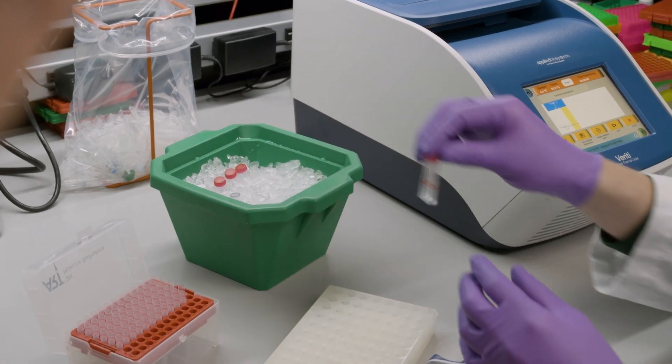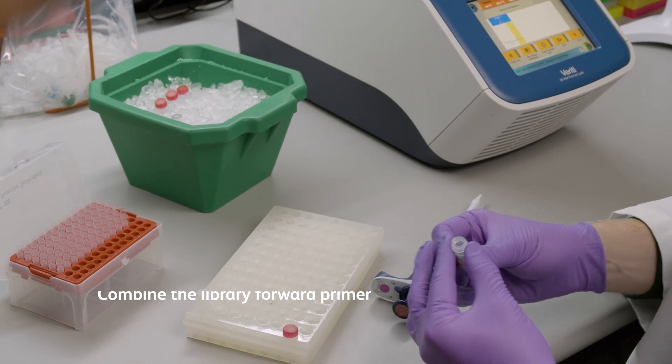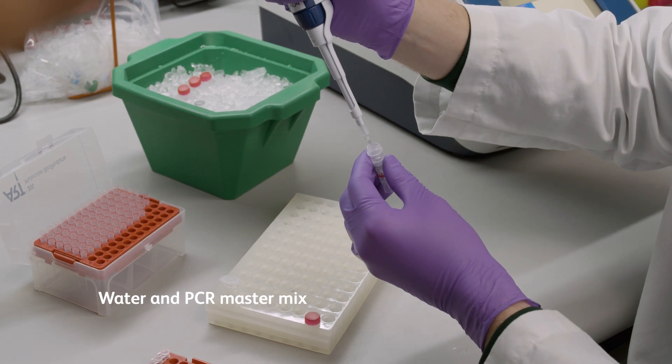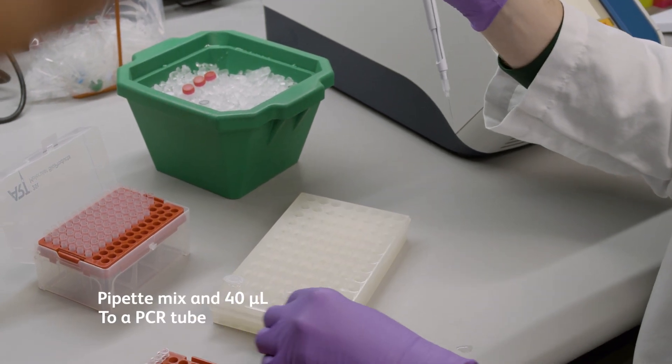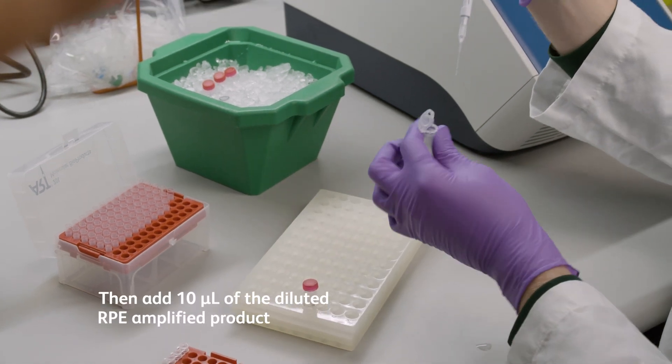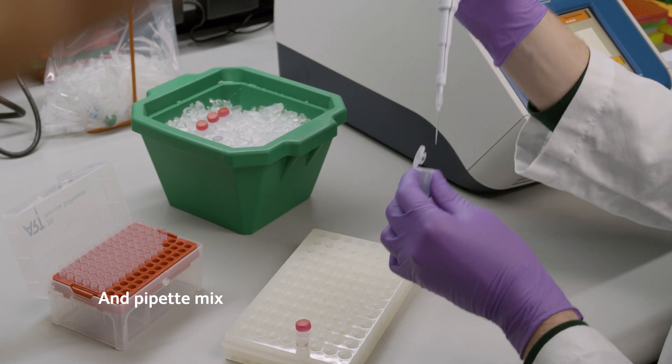Then, make the WTA PCR master mix by combining the library forward primer, one of the four library reverse primers, water, and PCR master mix. Pipette mix and add 40 microliters to a PCR tube. Then, add in the 10 microliters of the diluted RPE amplified product and pipette mix.